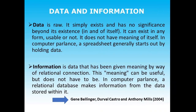Data is raw — it simply exists and has no significance beyond its existence. It can exist in any form; it may or may not be usable, and it does not have any meaning of itself. In computer terms, a spreadsheet starts out by holding data — you type rows and columns of numbers. Information, on the other hand, is data that has been given meaning by way of relational connection. This meaning can be useful, but does not necessarily need to be. A relational database management system (RDBMS) makes information from the data stored within it.